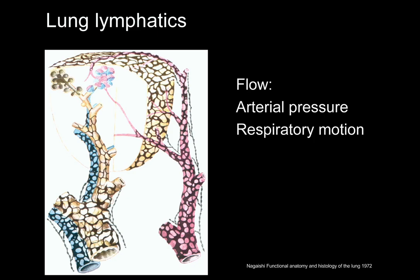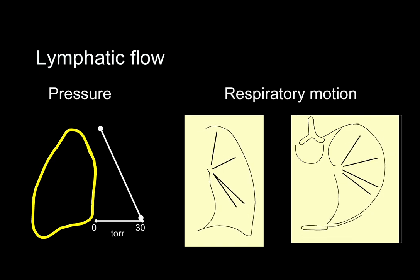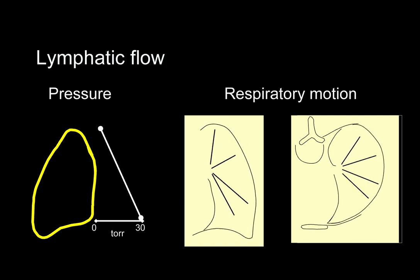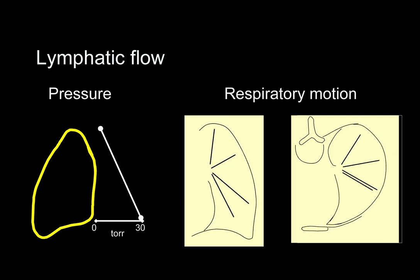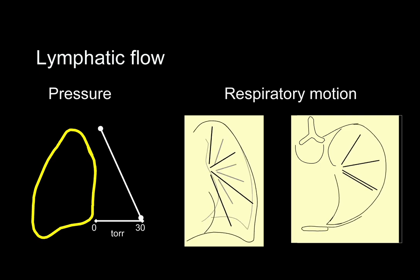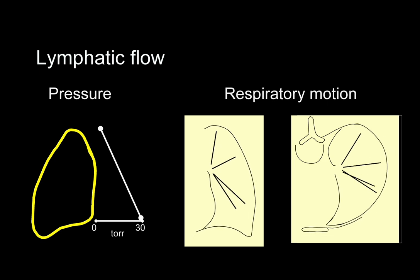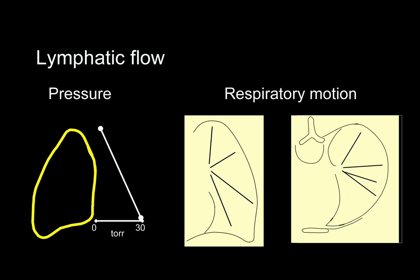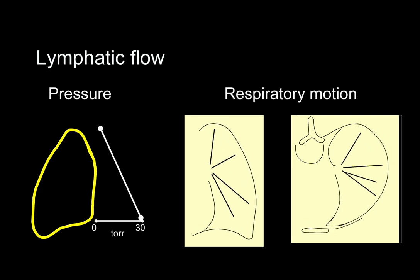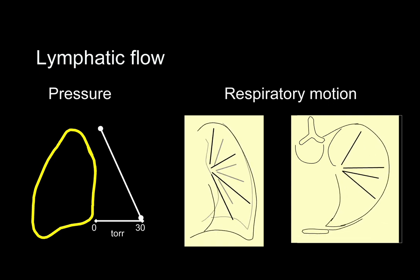As we have seen, removal of particles is slow. Lymphatic flow is, in part, determined by arterial pressure and respiratory motion, which aids lymphatic flow. Arterial pressure is non-uniform; the low-pressure pulmonary artery system is linearly affected by gravity. Normal pulmonary pressure is just sufficient to perfuse the apex of the lung, so the driving pressure for lymphatic flow will diminish towards the lung apex. In addition, passive respiratory motion is non-uniform — the lung bases and anterolateral portion of the lung undergo a greater degree of respiratory expansion than the apices and dorsal aspect of the lung.